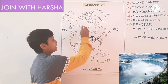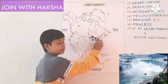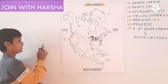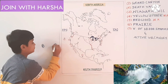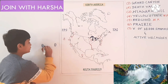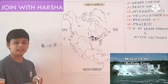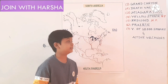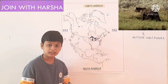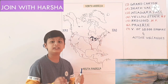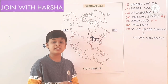Next one is Niagara Falls. Niagara Falls is between Canada and USA. Lake Erie and Lake Ontario are connected by Niagara River, and this Niagara River created this wonder. Next one is Yellowstone National Park. This National Park is the first national park in the world, known for its wildlife and geothermal features, especially the Old Faithful geyser. Jim Corbett is the first national park in India.